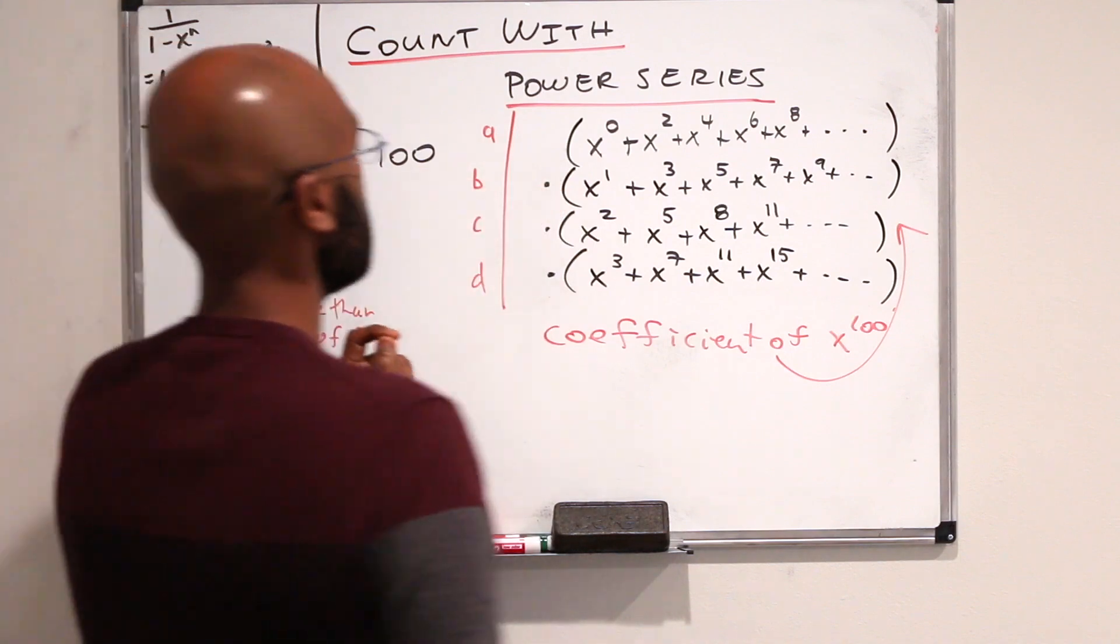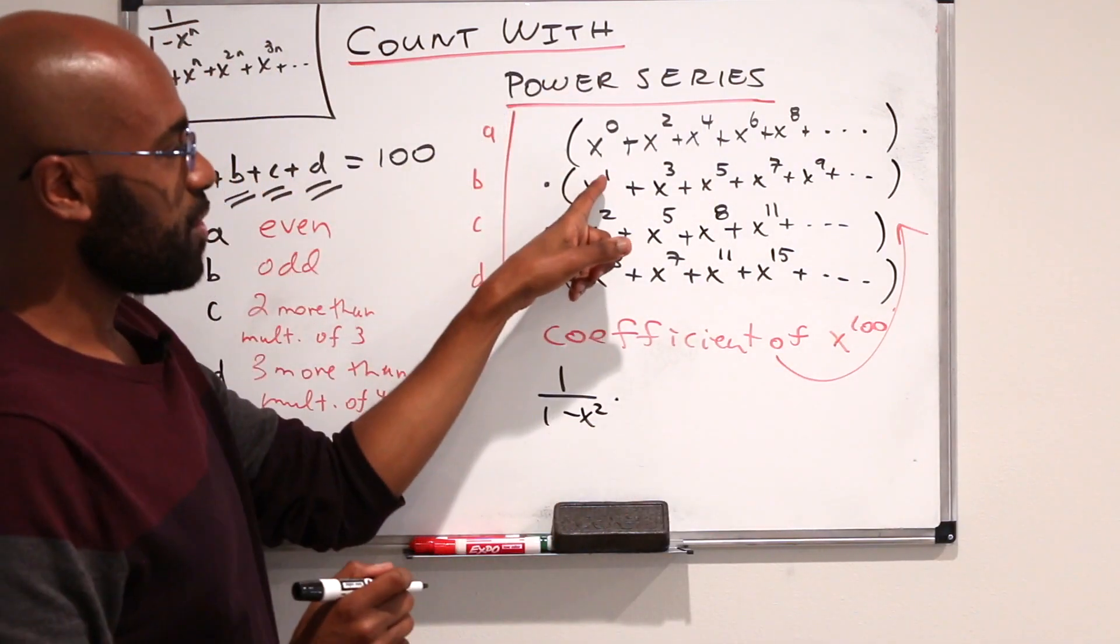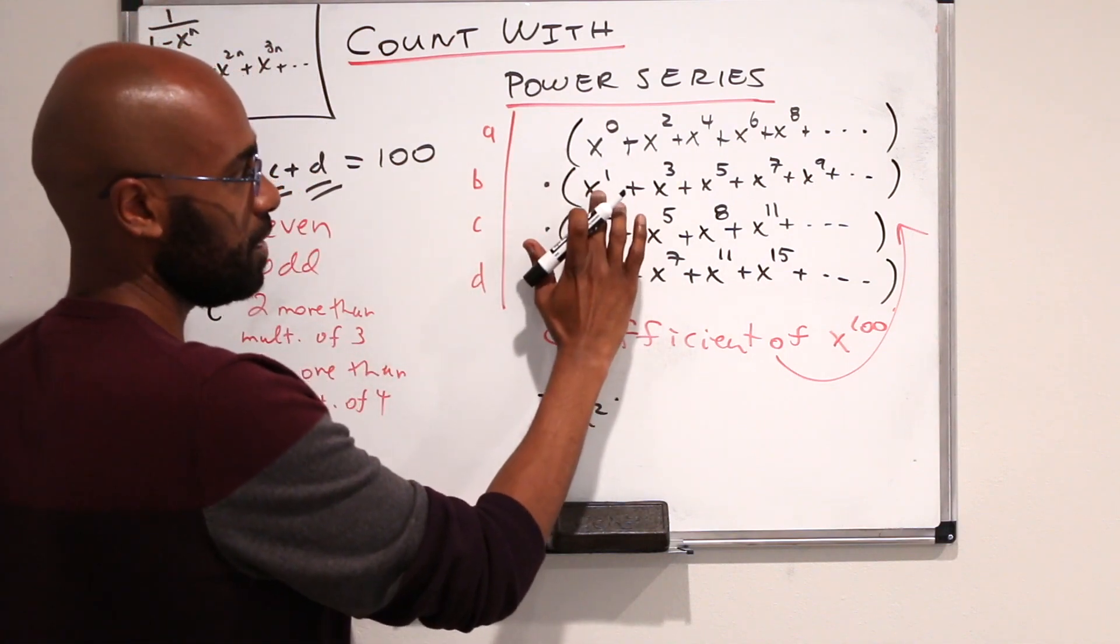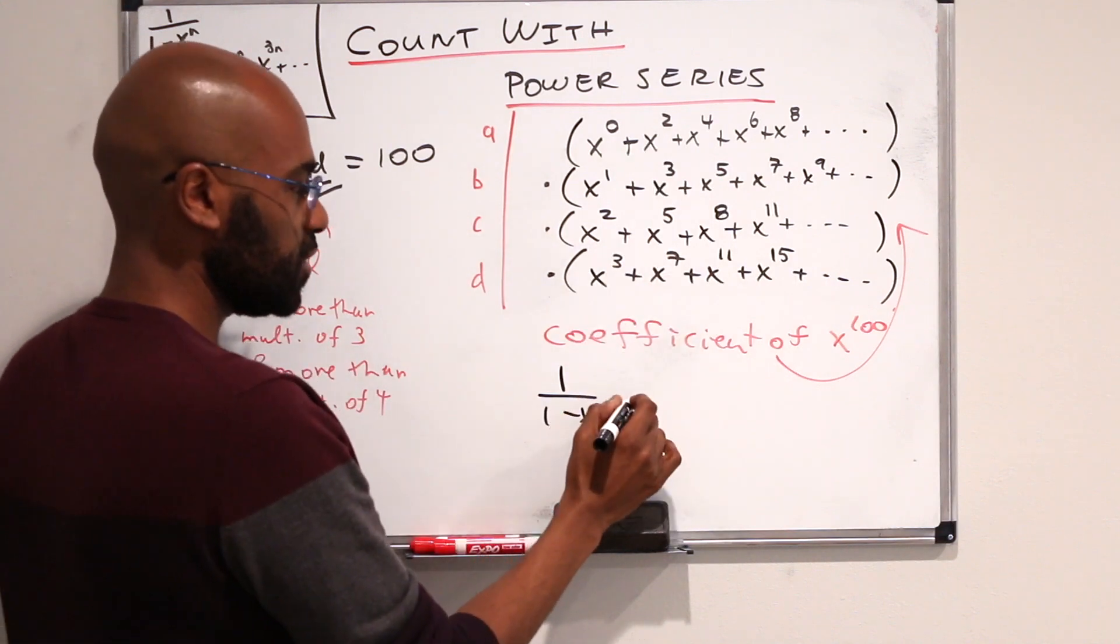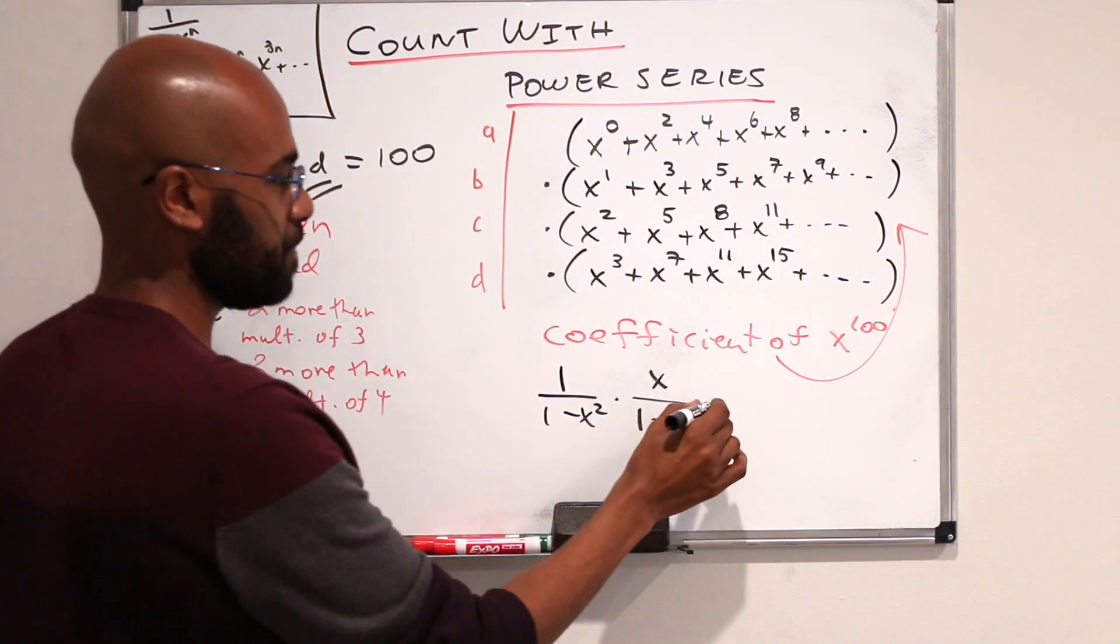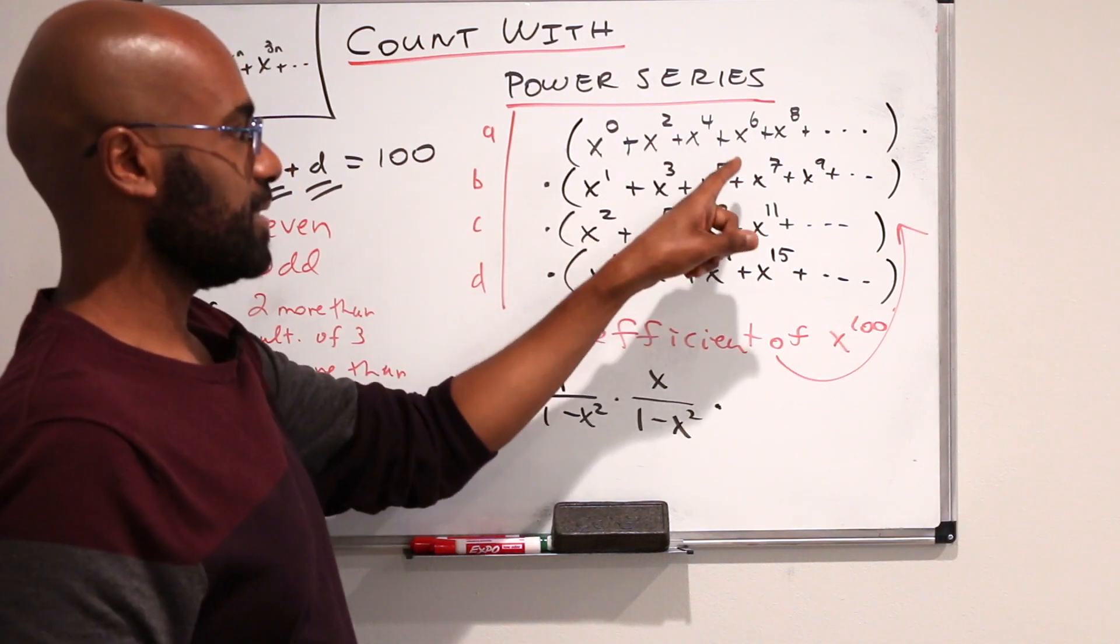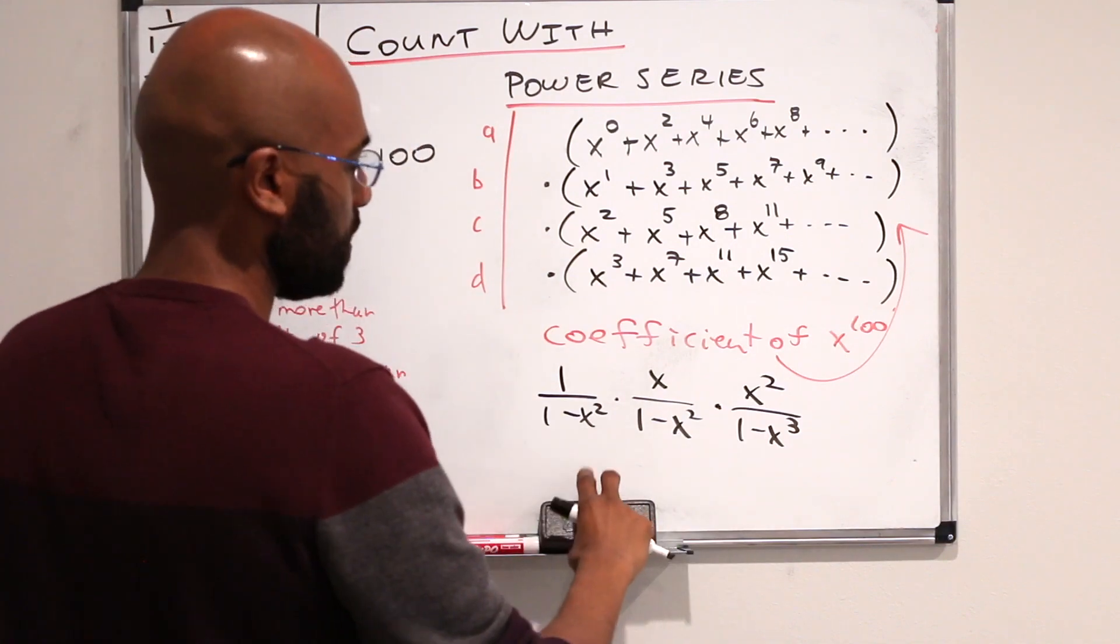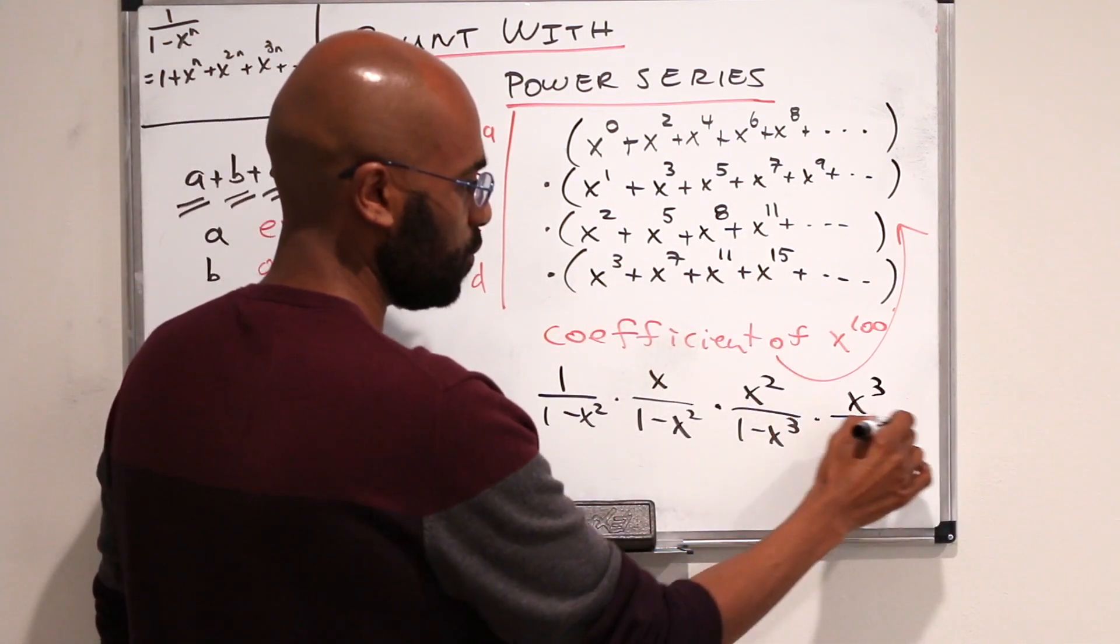For example, this first series is 1 over 1 minus x squared. And this series is not exactly the same because it doesn't start with a 1 coefficient, but we can pull out a term of x. So this can be written as x times 1 over 1 minus x squared. If we do a similar thing over here, if we pull the x squared term out, this series is x squared over 1 minus x cubed. And finally, if we factor out x cubed, we get x cubed over 1 minus x to the 4th.